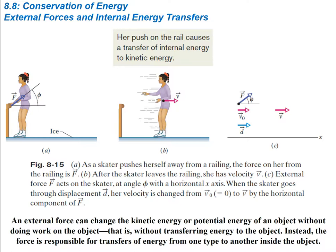The last section talks about external forces and internal energy transfers. Looking at our skater: her push on the rail causes a transfer of internal energy to kinetic energy. She pushes off a wall at some angle, and we know there's an equal and opposite force — she's putting force onto the wall, and the wall acts back on her with an equal and opposite force. This transfers the energy she had in her hands into her own kinetic energy, so it's actually internal energy when you consider just her as the system.